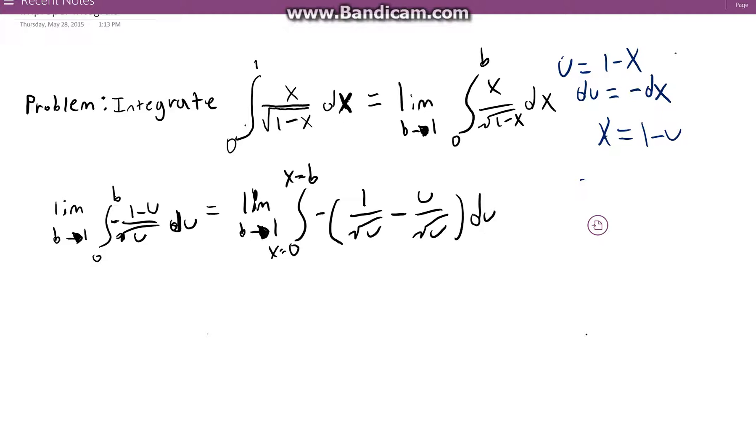Then I'm also going to use exponents instead of fractions to describe these terms. So that means we're doing the limit as b approaches 1 from 0 to b, x equals negative u to the negative 1 half minus u to the 1 half du.